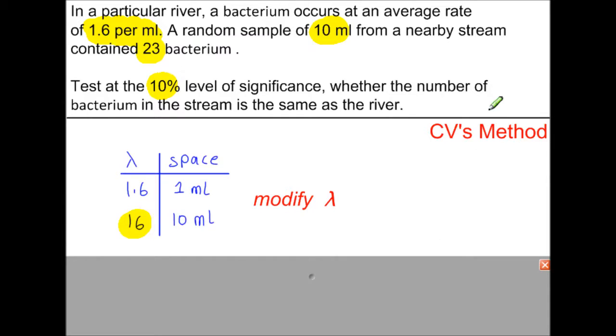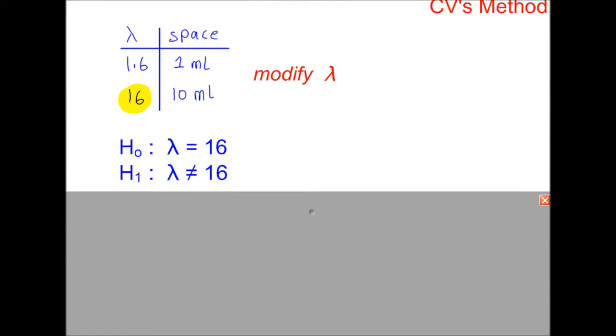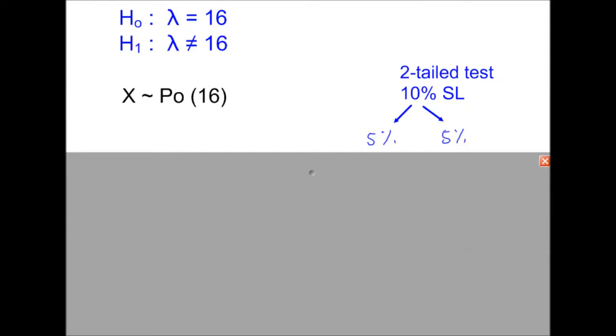Now starting with the critical values method, which is good for calculating type 1 and type 2 errors if needed. H0: lambda is 16. H1: lambda is not equal to 16. So this is the Poisson distribution that we're working with. Because we have a two-tail test, we need to split the significance level into 5% and 5%.